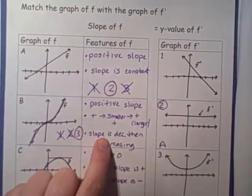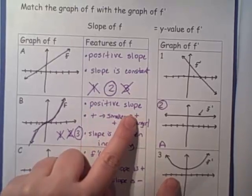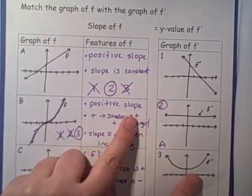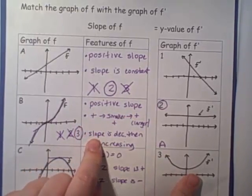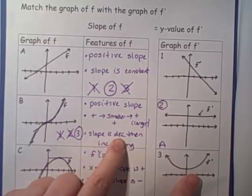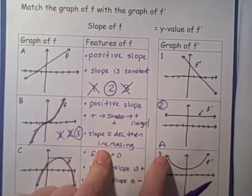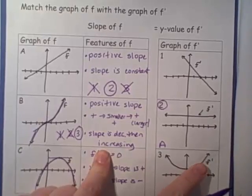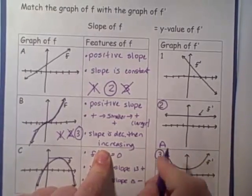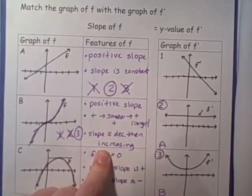Let's make sure graph 3 matches graph B. Are the y-values always positive? Yes. Are the y-values decreasing then increasing? Over here the y-values are decreasing and over here they're increasing. So graph 3 is definitely graph B.